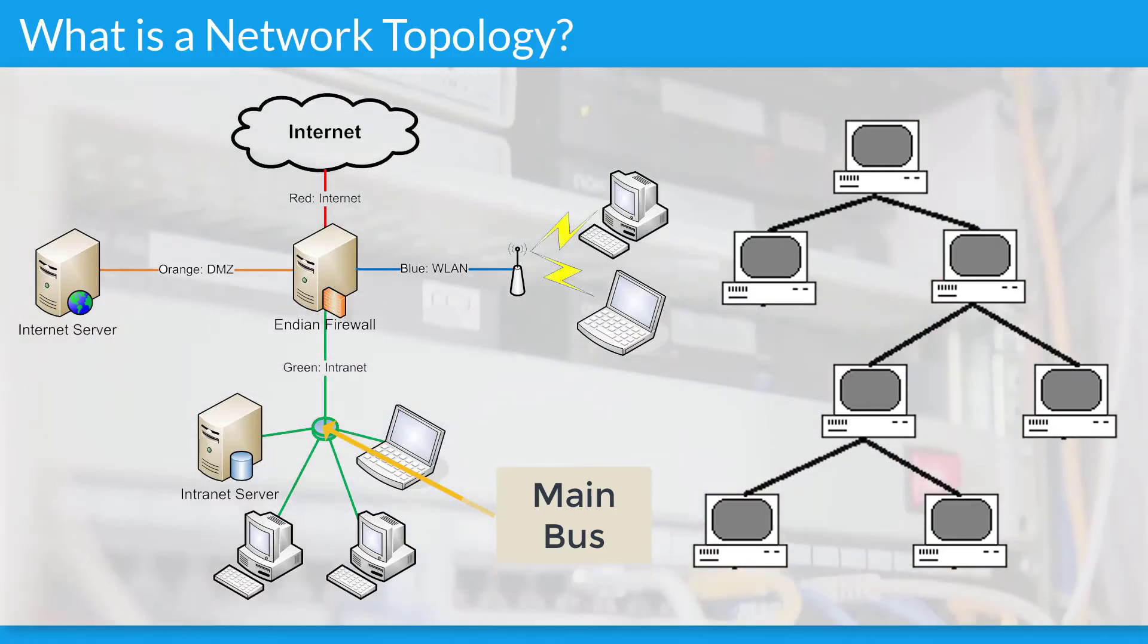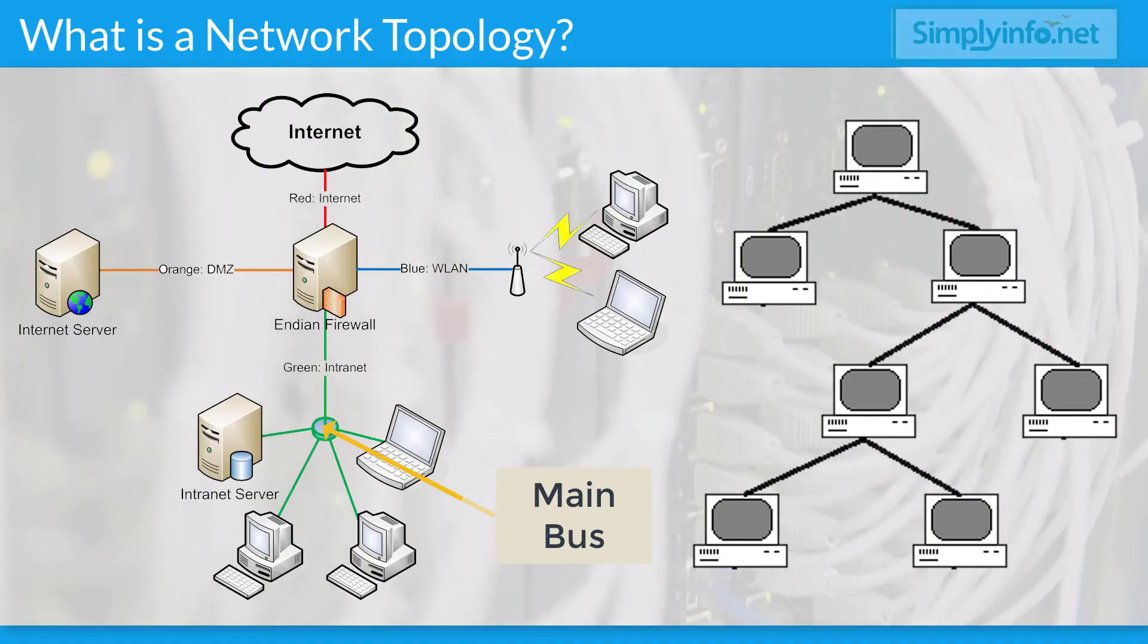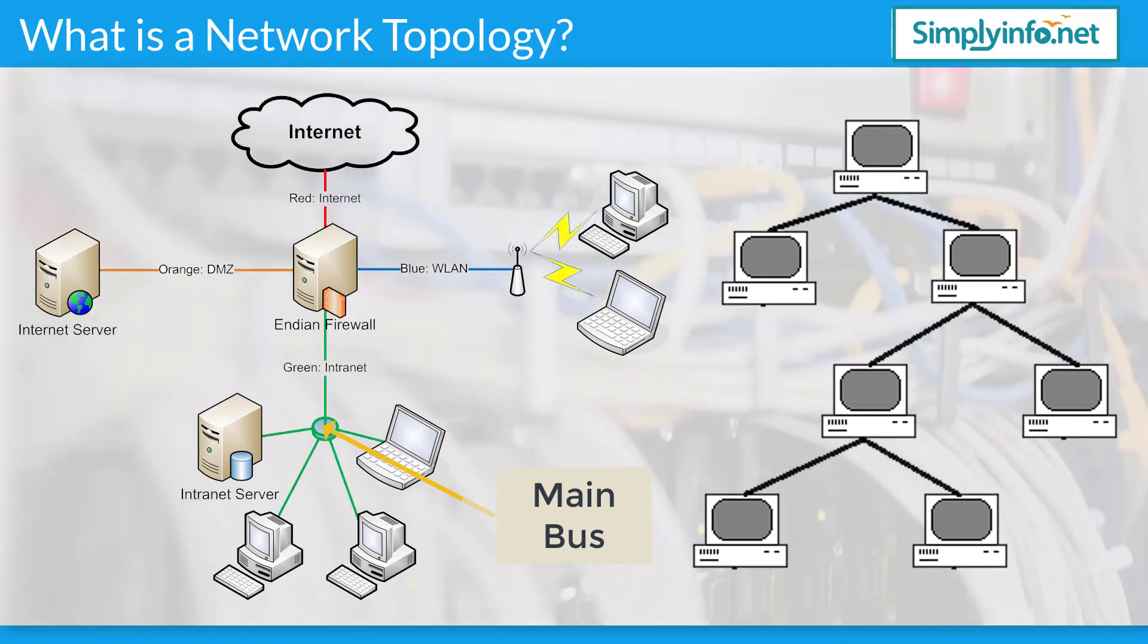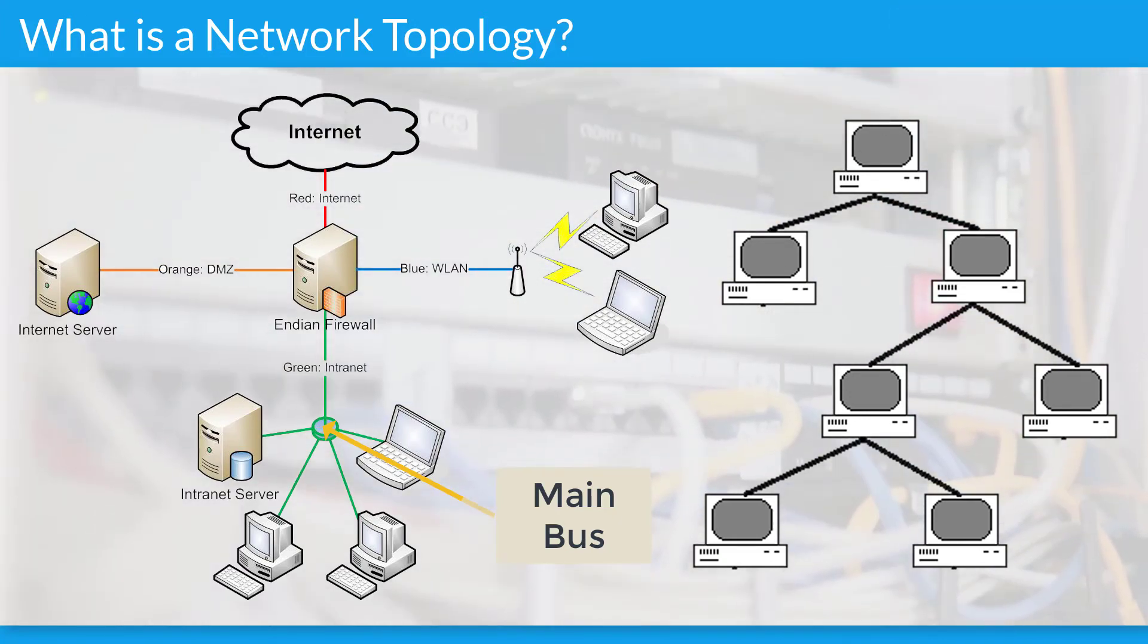Logical or signal topology refers to the nature of the paths the signals follow from node to node. In many instances, the logical topology is the same as the physical topology. But this is not always the case. For example, some networks are physically laid out in a star configuration but they operate logically as bus or ring networks.